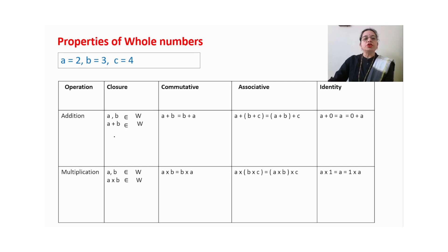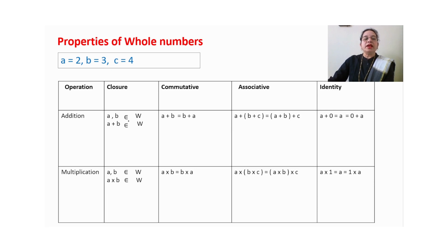Let us start with the closure property. If a is a whole number and b is a whole number, then their sum is also a whole number — this is closure property. For multiplication: if a is a whole number and b is a whole number, then their product is also a whole number. The symbol means 'belongs to', so in mathematical terms we write: a, b belongs to whole numbers.